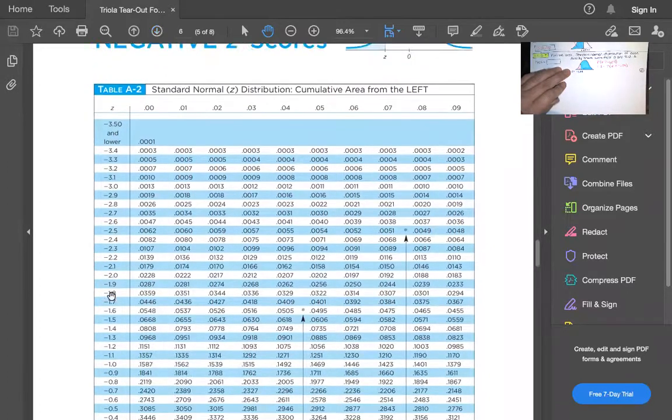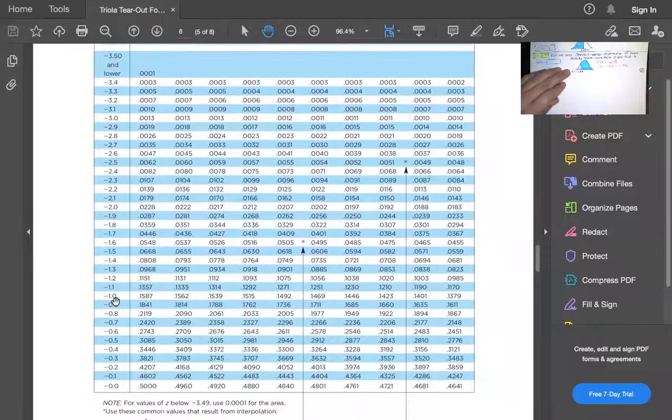So we go down, scroll down until you get to this negative 1.0 and then the next digit is 4 so we have negative 1.04. This is negative 1.00, negative 1.01, 2, 3, and 4. So negative 1.04 is right here.